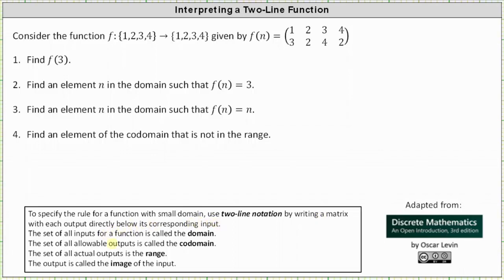The set of all inputs for a function is called the domain. The set of all allowable outputs is called the codomain. The set of actual outputs is the range, and the output is called the image of the input.